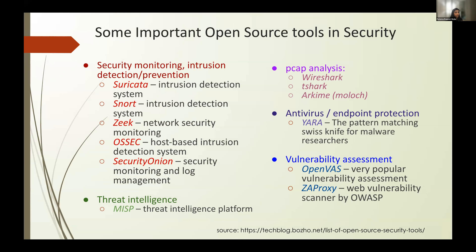Threat Intel: MISP is another great platform. They share IOCs — indicators of compromise. Anytime an exploit, ransomware attack, or any kind of attack happens, the IP addresses that are bad or seen attacking systems are called IOCs. Not only IPs, but there are different categories: hashes of bad and malicious files, IP addresses, different kinds of signatures available to detect different things — all categorized as indicators of compromise. If there are platforms out there sharing that information, you want to make use of it, because you can't go and mine that kind of information by yourself easily. MISP lets you create an account and start pulling feeds on bad actors and adversaries for free.